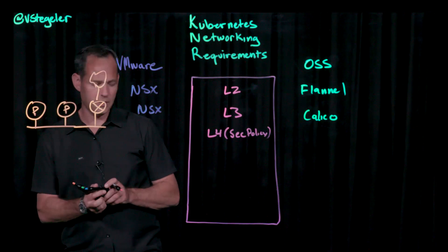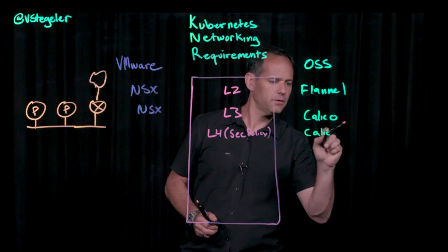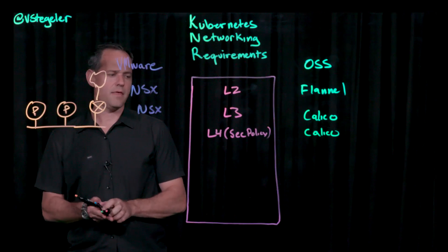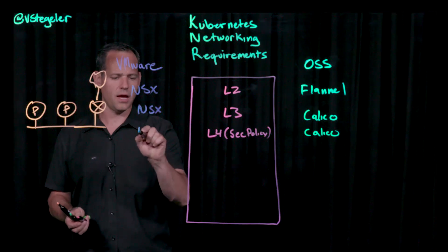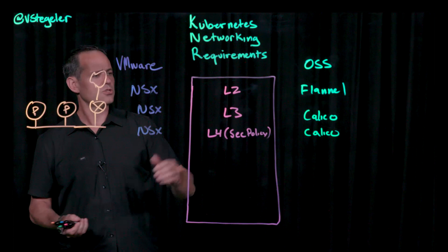So of course, that's when you need a technology. Again, in this case, this is Calico, which can provide that functionality on the open source side. And then, of course, on the VMware side, NSX continues to provide that functionality. So there you go. Layer two, layer three, layer four, those are kind of the basics around networking security.